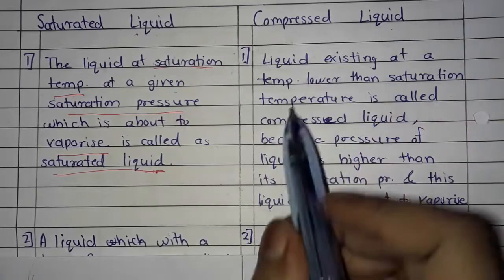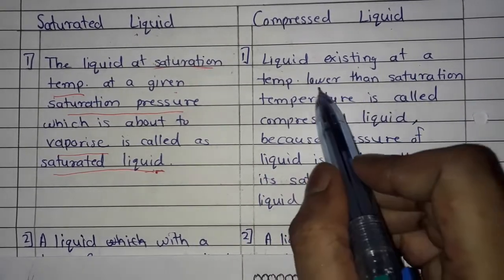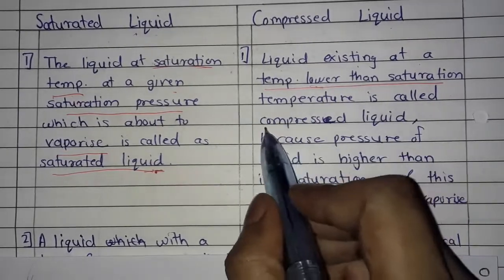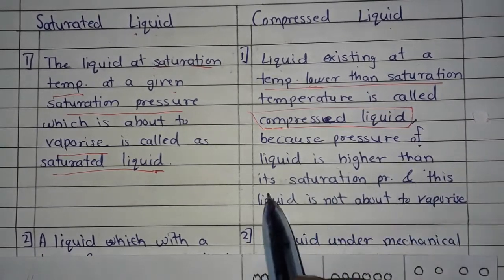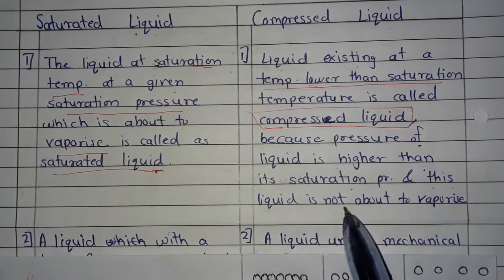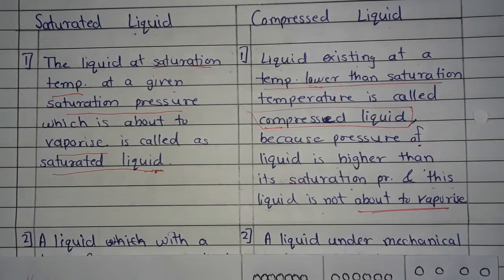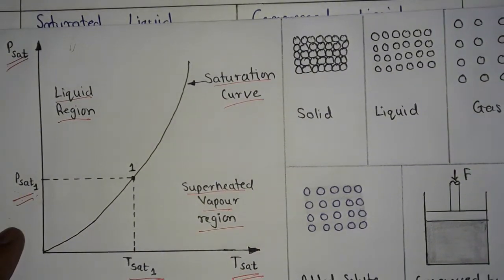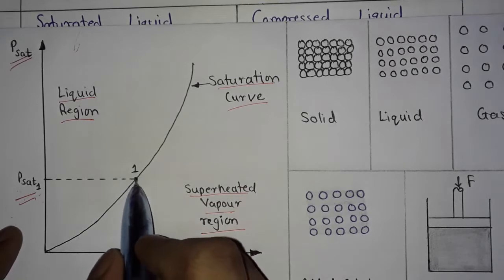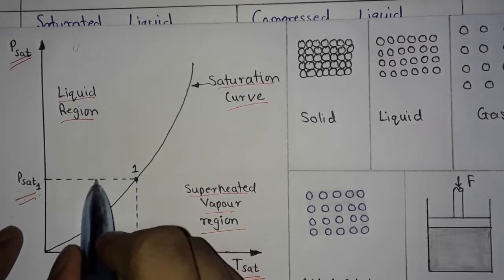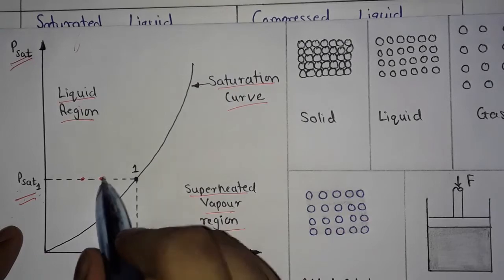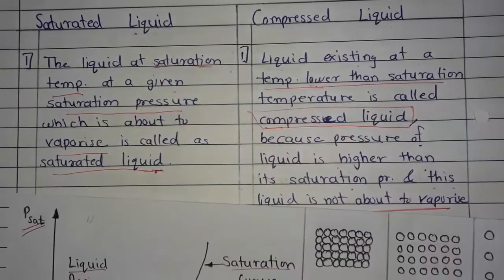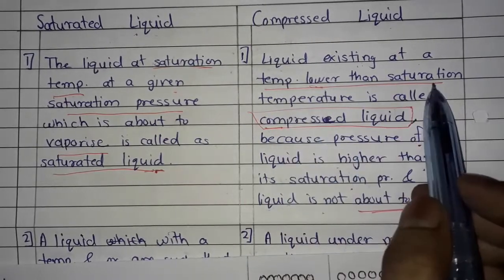Next is compressed liquid. Liquid existing at a temperature lower than saturation temperature is called compressed liquid, because the pressure of the liquid is higher than the saturation pressure. The temperature is less than the saturation temperature — the liquid exists here, less than T-sat.